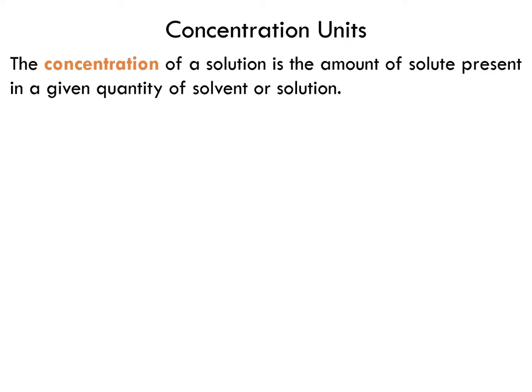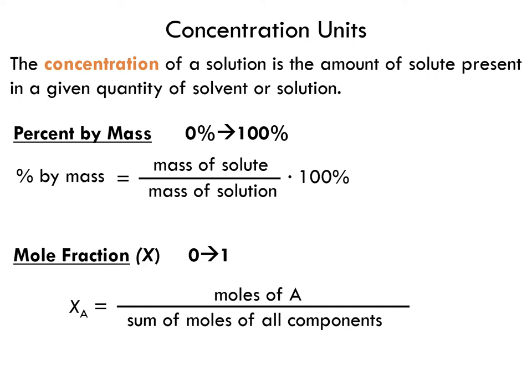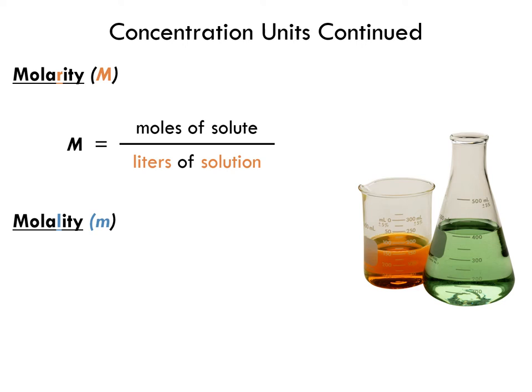Let's go over the different kinds of concentration that we have learned during the semester. We have learned to express the concentration of the solute as percent by mass — that's what we did in the first lab when calculating the percent by mass of a salt solution in water. When talking about gases we learned about mole fraction, and when talking about solutions we learned about molarity. Molarity is the number of moles per liter of solution. Now we'll introduce a new type of concentration called molality — just one letter of difference, an 'l' instead of an 'r'.